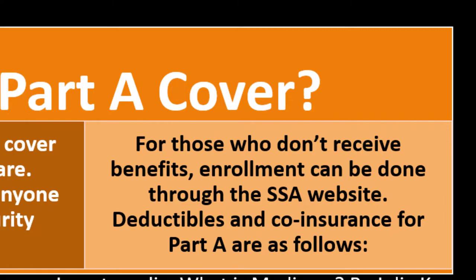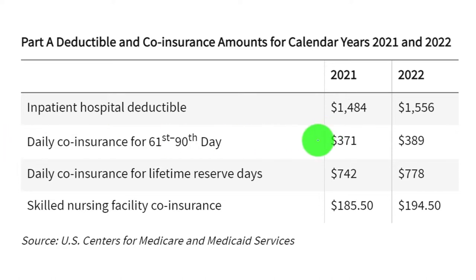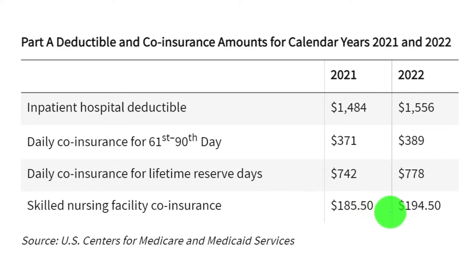Deductibles and coinsurance for Part A in 2021 and 2022: The inpatient hospital deductible was $1,484 in 2021 and $1,556 in 2022. Daily coinsurance for days 61–90 was $371 in 2021 and $389 in 2022. Skilled nursing facility coinsurance was $185.50 in 2021 and $194.50 in 2022.